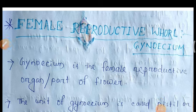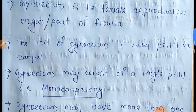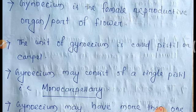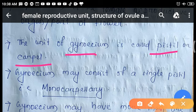Let's start today's topic: the female reproductive unit. We have completed the male reproductive unit, that is stamen. Now we will start the female reproductive unit, also called gynosum. Gynosum is the female reproductive organ of the flower. The unit of gynosum is also called pistil or carpel — these three names are synonyms of each other.